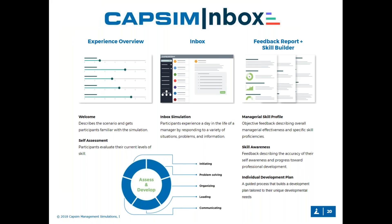CAPSIM Inbox provides you and your student with a snapshot in time of where their development is at that point as they go through three phases of an abridged exercise. As a general overview, it's a web-based application where they go through an experience overview, then a self-assessment where they rate themselves against their peers, then an inbox simulation where they're placed in the day in the life of a manager at a fictitious company — responding to emails, text messages, and videos — and finally they receive a detailed feedback report and an individual development plan builder.